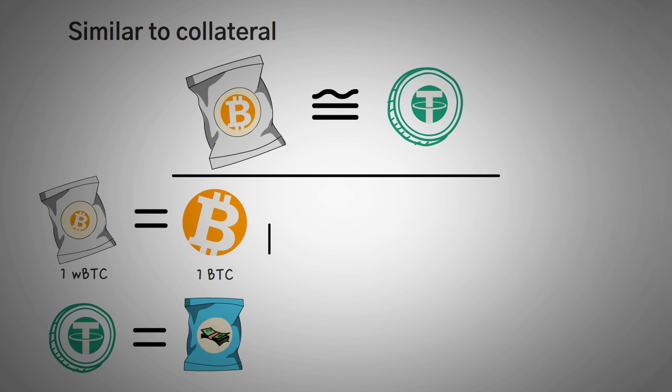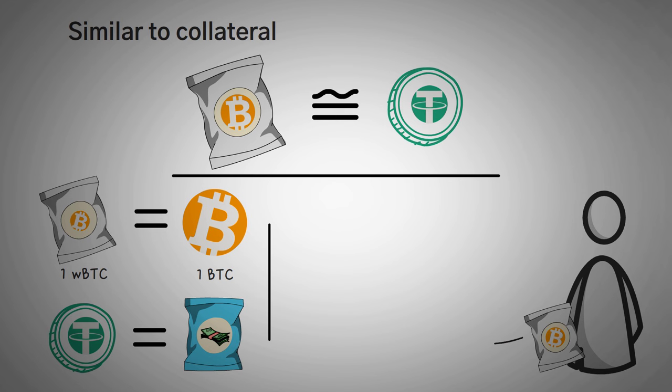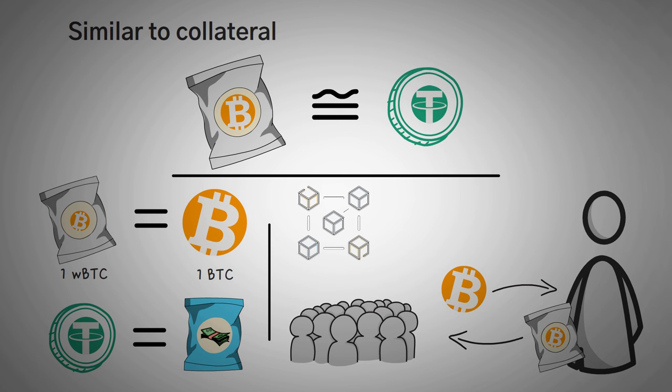How do they do this? Well if you own one wrapped bitcoin, you can actually turn it into a real bitcoin at any time. So wrapped bitcoins are 100% actually backed by a real asset that they are representing. This way, traders are incentivized to keep the price of the wrapped token the same as the real coin.